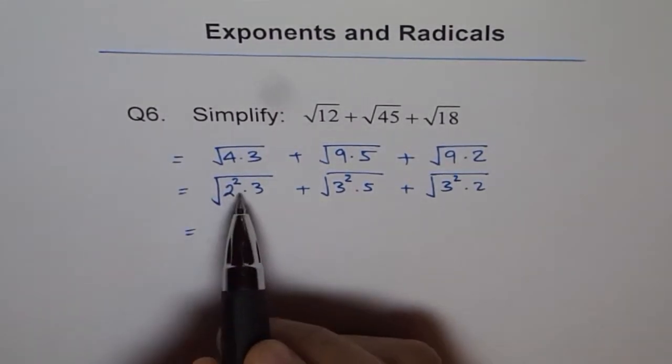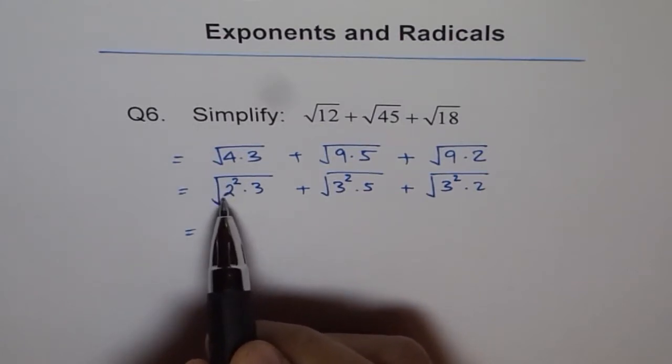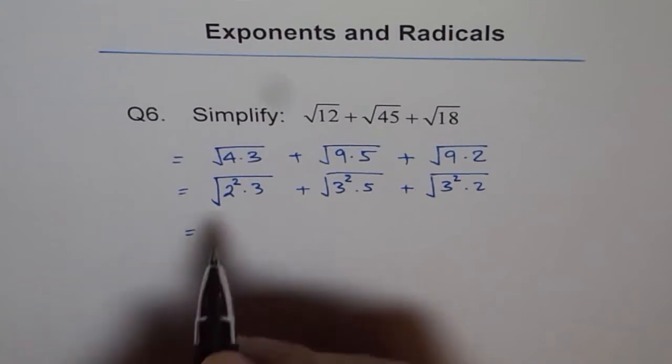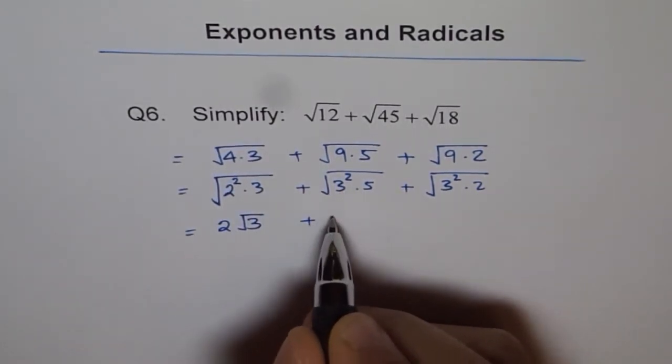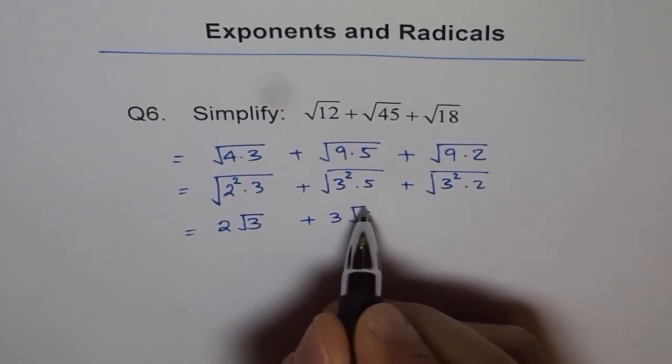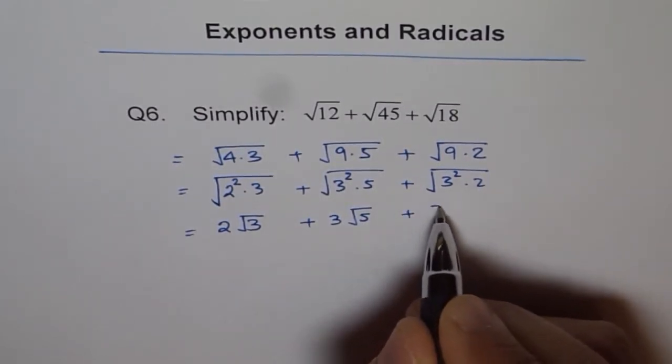So now, from the square root, 2 and 2 times 2. So there are two common factors. I can take out 1. So it becomes 2 square root 3 for me, plus this is 3 square root 5, and here I have 3 square root 2.